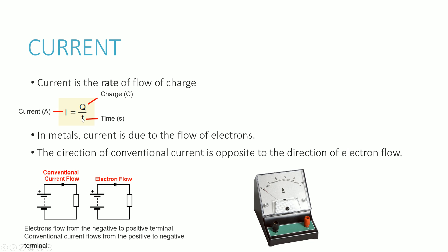In metals, current is generally due to the flow of electrons, and you should already be aware of that. The direction of conventional current is always opposite to the direction of electron flow.